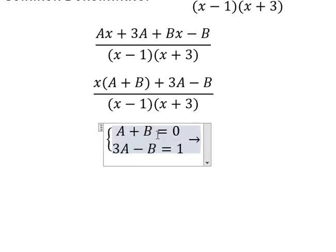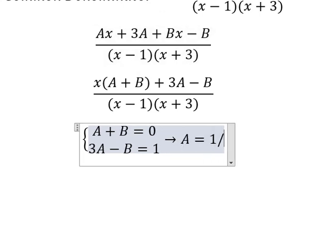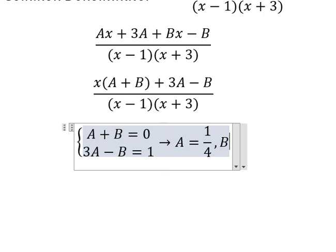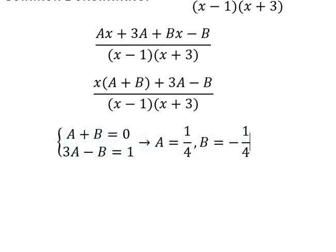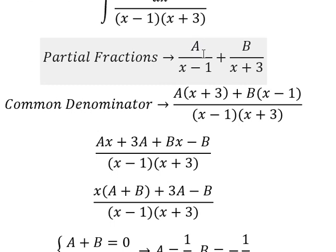Now we need to find the solutions of A and B. So A equals 1 over 4, B equals negative 1 over 4. So we put A and B back in here.